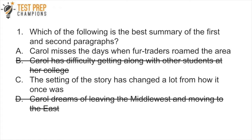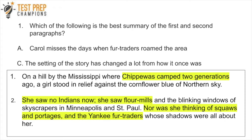Process of elimination is always a good strategy on the GED. We can eliminate B and D right away because neither of these things came up in the passage. Now we're left with A and C. Looking at the text, it says the Chippewas camped two generations ago and she saw no Indians now. It doesn't say she misses the days of the fur traders — in fact, it says she's not even thinking about them. So the answer is C.